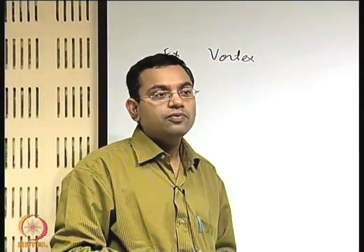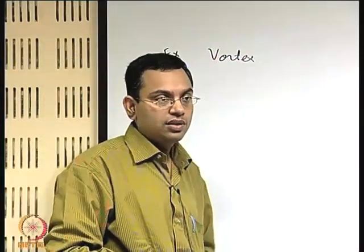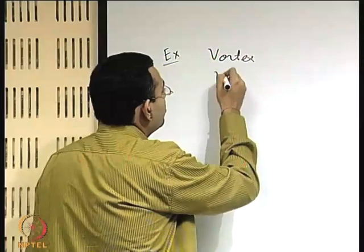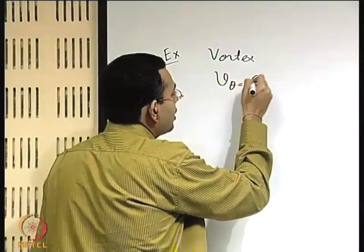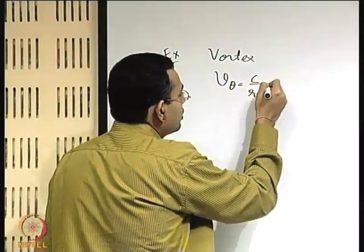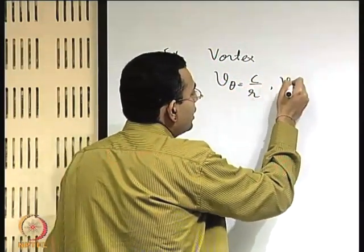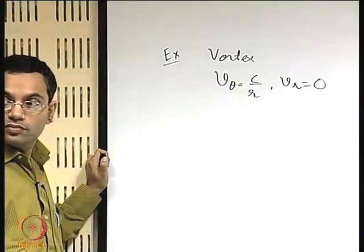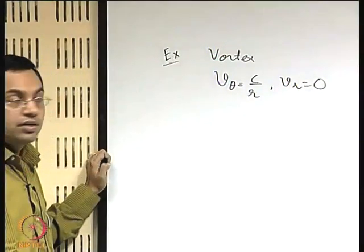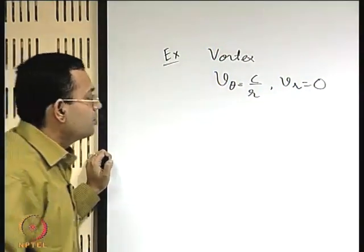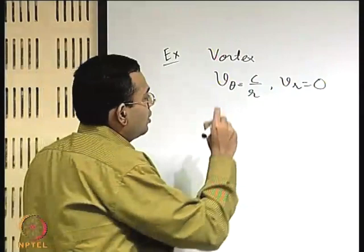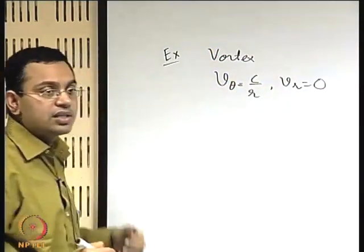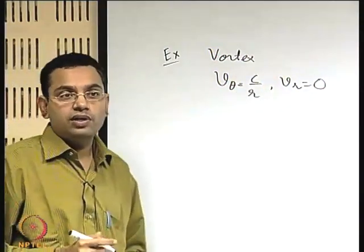What should be its velocity components? We already know V_θ = C/r and V_r = 0. Now this C may be related to the strength of the vortex.